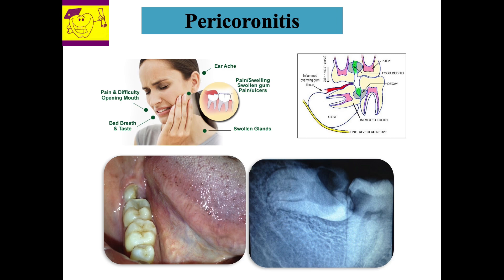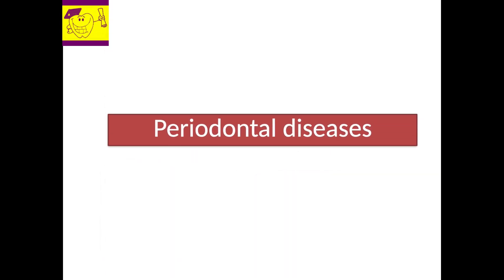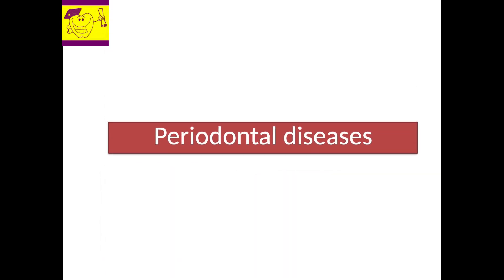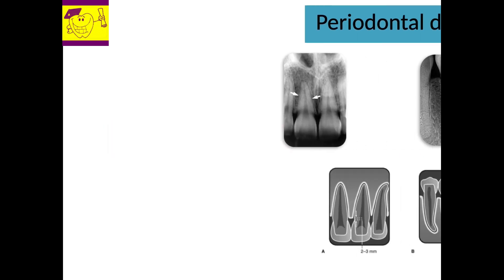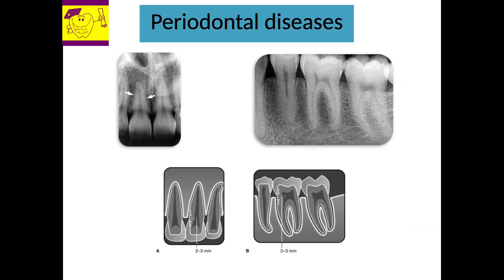Disorders involving the structures surrounding the tooth — namely the gingiva, alveolar bone, and cementum — are called periodontal diseases. The prominent radiographic changes of periodontal diseases are widening of the periodontal ligament space, loss of lamina dura, and crestal or interdental bone loss. This picture depicts the normal appearance of the periodontal ligament, lamina dura, and the normal level of interdental bone.